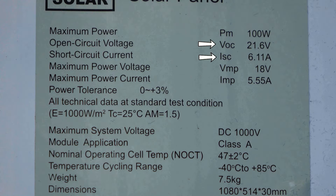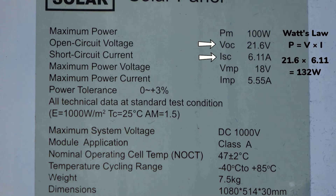With that said, we might expect a reduced output today since the temperature this afternoon is somewhere around 88 degrees Fahrenheit, which is a bit higher than the standard test conditions of 77 degrees Fahrenheit. Now, if you were to multiply the open circuit voltage (VOC) by the short circuit current (ISC) according to Watt's law, then you'd end up with a higher output power than what is actually reported on the label. In this case, multiplying 21.6 volts by 6.11 amps equals almost 132 watts — but that's a lot more than the 100 watts quoted on the label, and it would be wrong to think that this solar module could actually generate 132 watts.